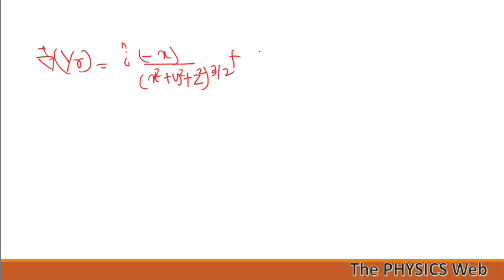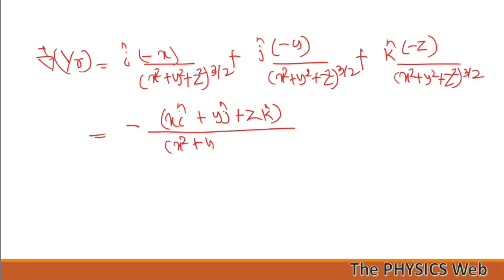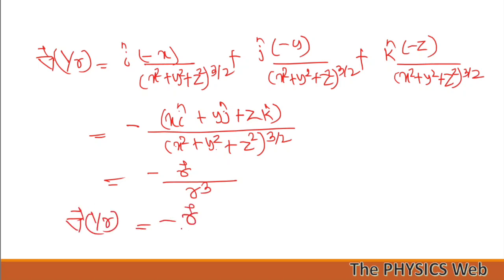So gradient of (1/r) = i-cap·[−x/(x²+y²+z²)^(3/2)] + j-cap·[−y/(x²+y²+z²)^(3/2)] + k-cap·[−z/(x²+y²+z²)^(3/2)]. Taking out the negative sign: −[x·i-cap + y·j-cap + z·k-cap] / (x²+y²+z²)^(3/2). The numerator is the position vector r-vector, and (x²+y²+z²)^(1/2) = r, so the denominator is r³. Therefore gradient of (1/r) = −r-vector / r³.